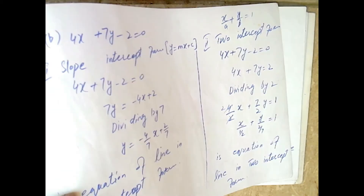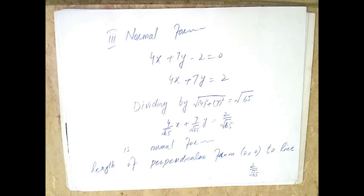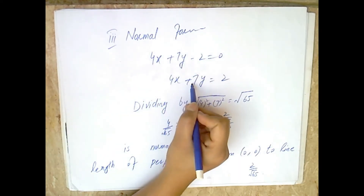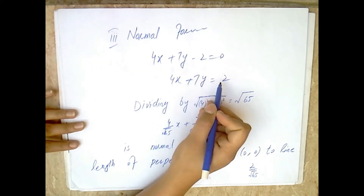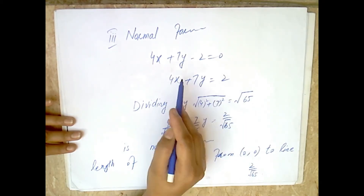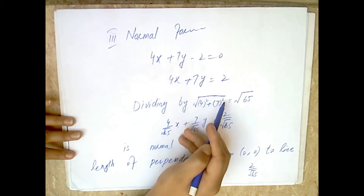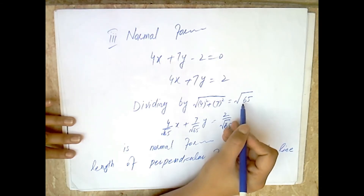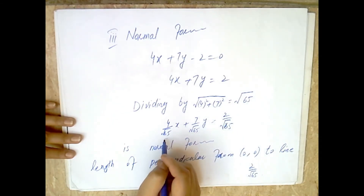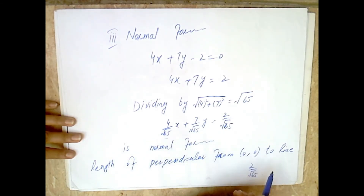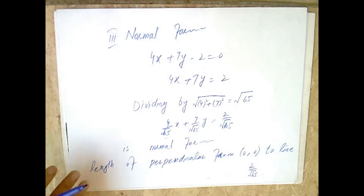Third, we find the normal form. From 4x + 7y = 2, we divide both sides by sqrt(4² + 7²) = sqrt(16 + 49) = sqrt(65). After dividing by sqrt(65), we get the normal form of the line. The length of the perpendicular from (0,0) to this line is 2/sqrt(65).